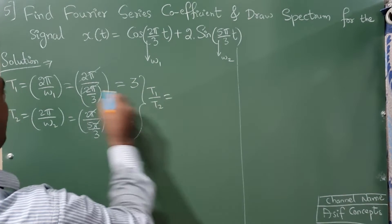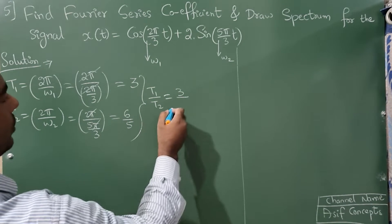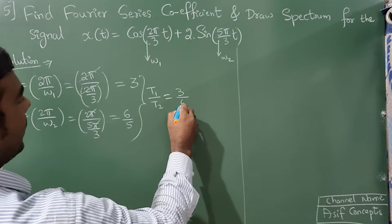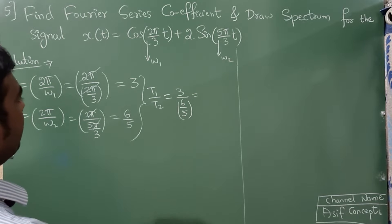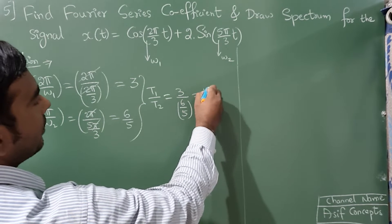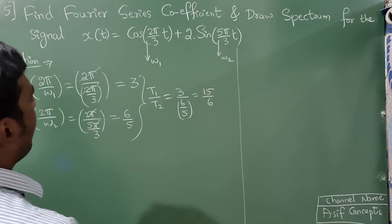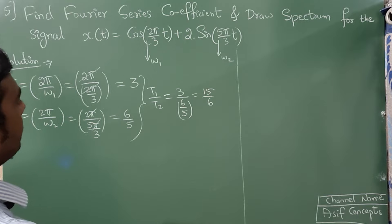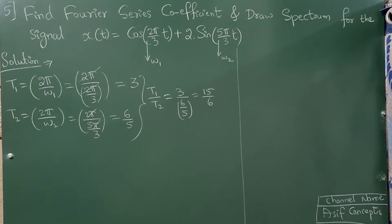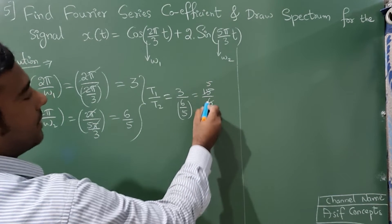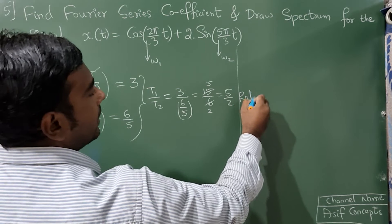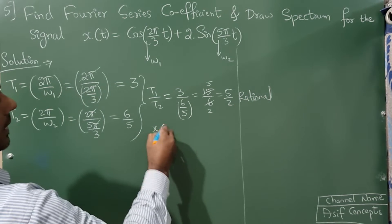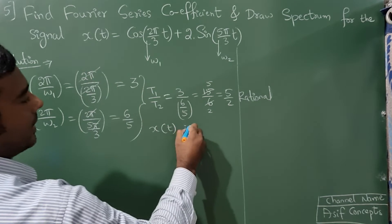Now compute T1/T2: T1 = 3, T2 = 6/5. So T1/T2 = 3 × (5/6) = 15/6 = 5/2. Since 5/2 is a rational number, we can confirm that x(t) is periodic.